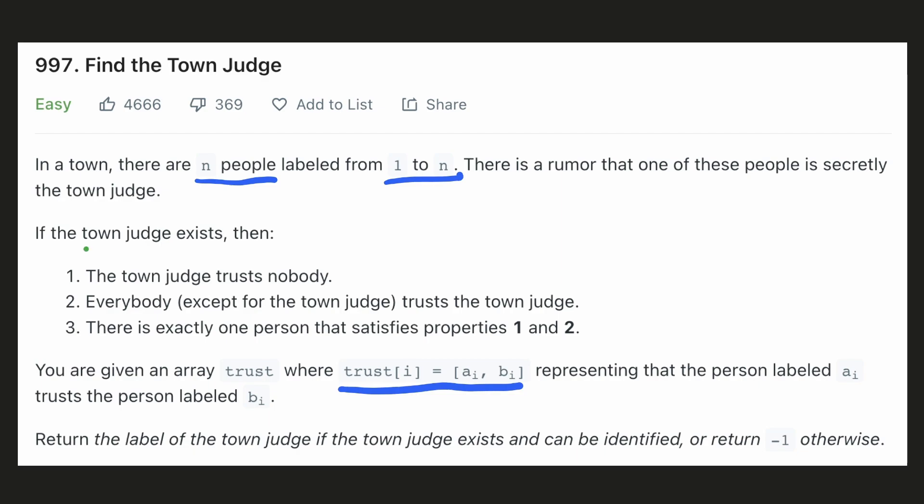Within those people there can be a town judge based on some conditions. The first condition is that the judge does not trust any person. The second condition is that everybody in the town except the judge himself trusts the judge, and finally there can be only one judge in this town. So based on these conditions we have to find the town judge if one exists, or otherwise return -1.